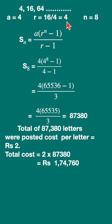Substitute these values here. Four raised to 8 is 65,536 minus 1 upon r is 4, r minus 1 is 3. Simplify this. You will get 87,380. So these many letters have been posted.